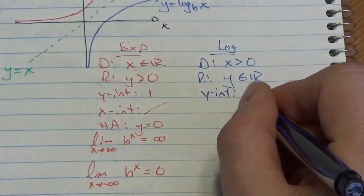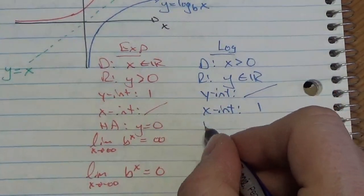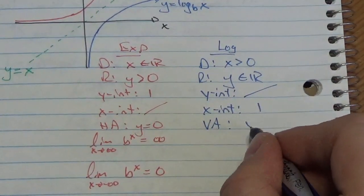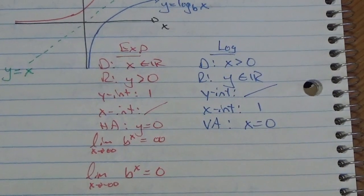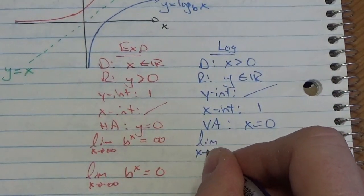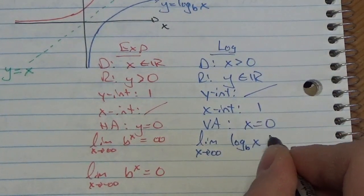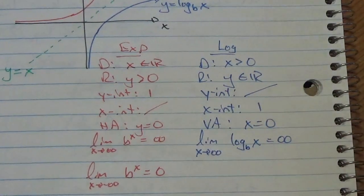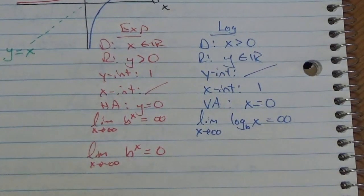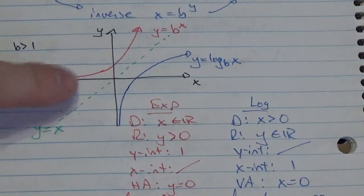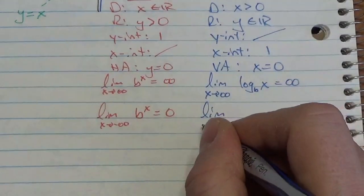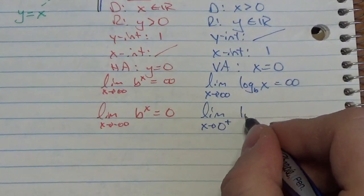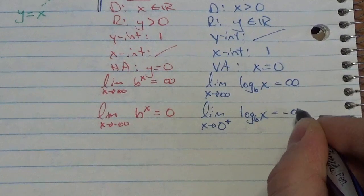The y-intercept, unless transformed, doesn't have one, but the x-intercept is going to be 1. It will have a vertical asymptote at x is equal to 0. The limit as x approaches infinity of the log base b of x is actually going to be infinity, because it does have an infinite range. But I can no longer take the limit as x approaches negative infinity, because the graph doesn't go that direction. What I can do is take the limit as x approaches 0 from the right of the log base b of x, and that is actually going to approach negative infinity.